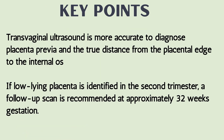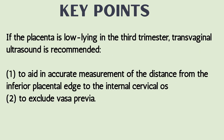Key points to remember: Transvaginal ultrasound is more accurate to diagnose placenta previa and the true distance from the placental edge to the internal os. If low-lying placenta is identified in the second trimester, a follow-up scan is recommended at approximately 32 weeks gestation. If the placenta is low-lying in the third trimester, transvaginal ultrasound is recommended to aid accurate measurement of the distance from the inferior placental edge to the internal cervical os and to exclude vasa previa.